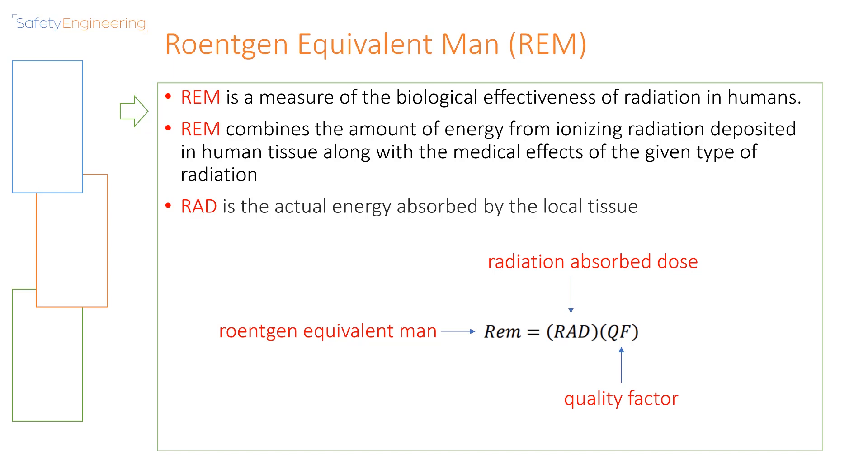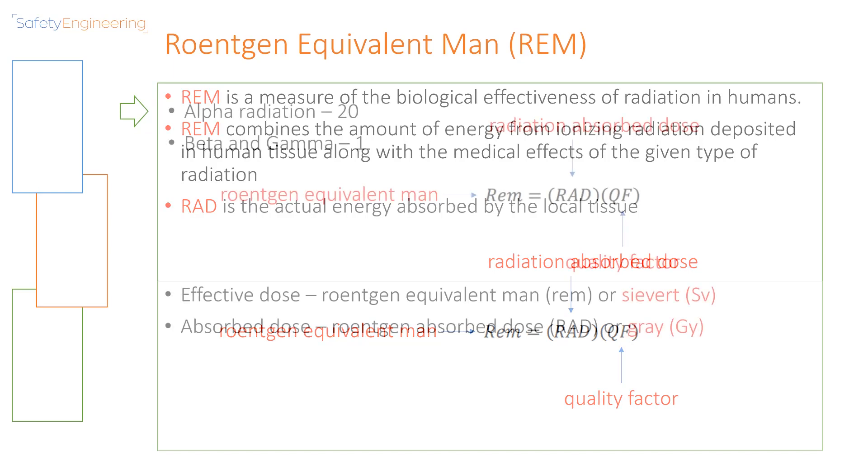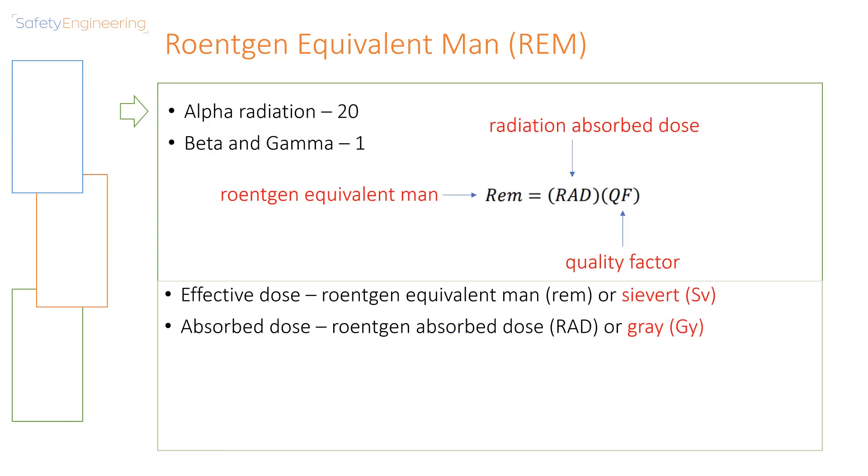The quality factor is dependent on the type of radiation, as you would see in the next slide. The quality factor for alpha radiation is 20, and the quality factor for beta and gamma radiation is 1. So simply calculating the REM would include multiplying the RAD by the QF, depending on the type of radiation that you are dealing with.